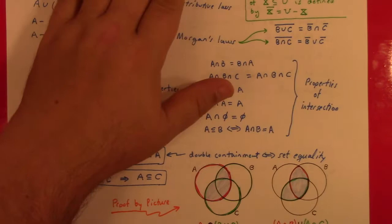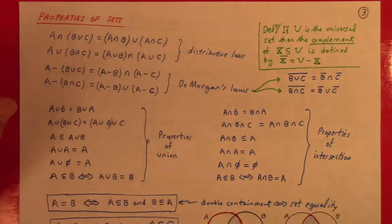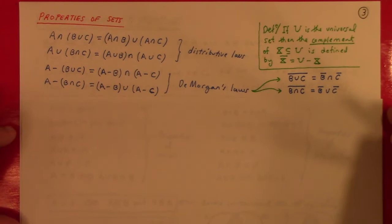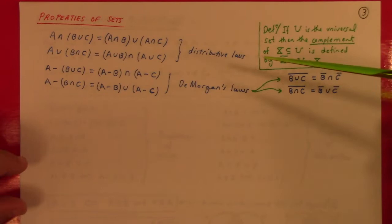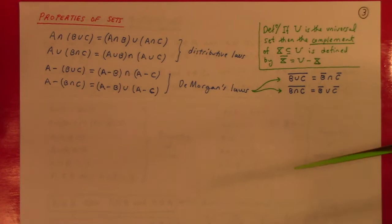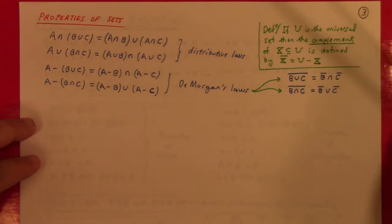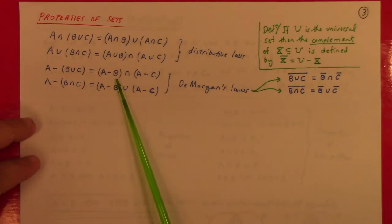Properties of sets. I took the liberty of looking outside Minetti to gather basic facts about unions and intersections, because topology is very set-theory based and we need to know these going forward. There are distributive laws: the intersection of a union is the union of the intersections, and the union of an intersection is the intersection of the unions. There are DeMorgan laws: the set difference of a union is the intersection of the set differences.